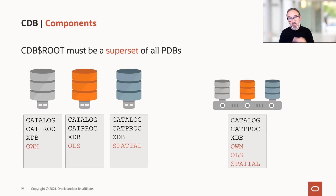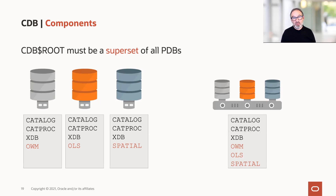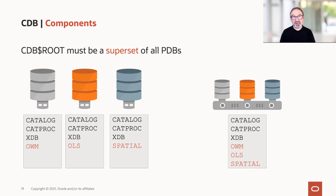So when we plug them in, the root container must have catalog, catproc, XDB — that's mandatory anyways — but it must also have workspace manager, label security, and spatial data option. If one of these is missing, then you can plug in your PDB, but it will never open unrestricted.